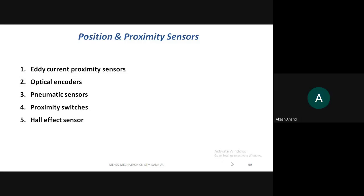Next are position and proximity sensors. You already know what position is. Proximity means just the presence of a nearby object — we are not measuring displacement or other physical parameters, but only finding the presence. This type of sensors are called position or proximity sensors.